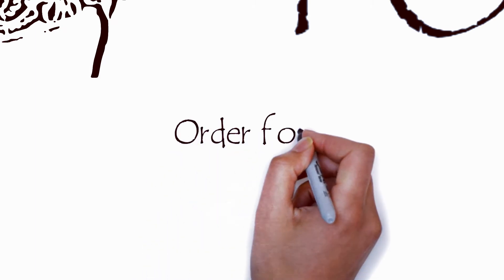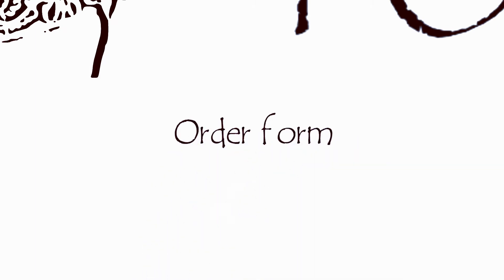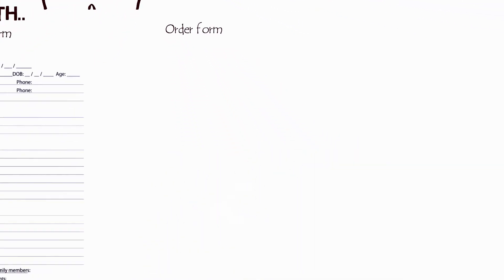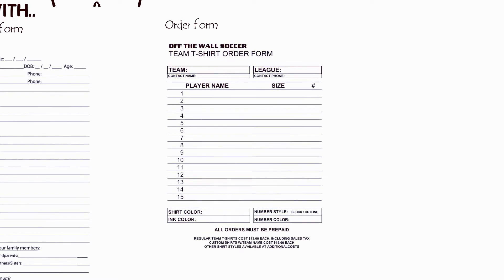Selanjutnya ada order form atau formulir pemesanan. Here's the example. As you can see, this order form is used to order a team t-shirt for a soccer club. Jadi formulir pemesanan ini digunakan untuk memesan kaos tim sepak bola. Inilah fungsi order form, untuk memesan sesuatu.